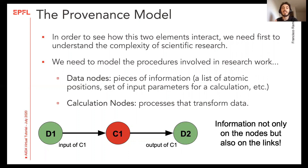This would be a single step of computational research represented this way. We see the transformation of some initial data d1 into an output data d2 through the process calculation c1. It is important to note that there is information not only inside of the data nodes, but also on the links, and this information is about the relationship between the different pieces of data. A scientific process or workflow will involve several of these steps.